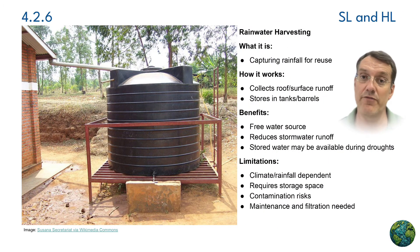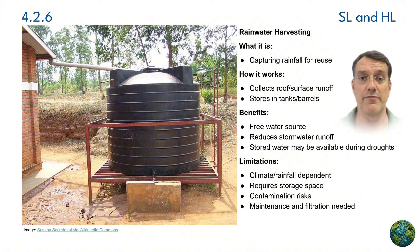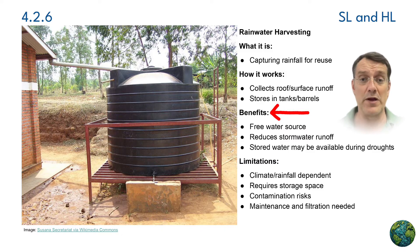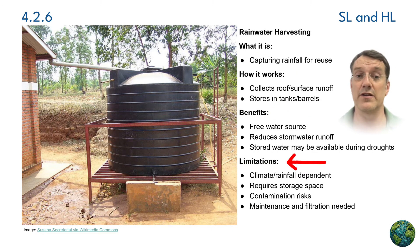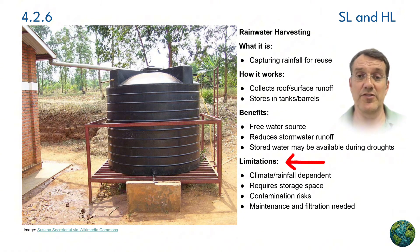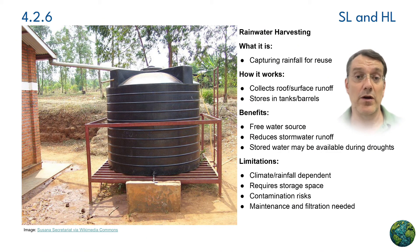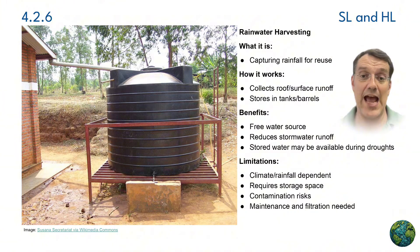Rainwater harvesting involves collecting rainfall for household use, typically from roof surfaces. The system collects roof or surface runoff and stores it in tanks or barrels for later use. Benefits include providing a free water source, reducing stormwater runoff, and making water more available during drought periods. Limitations include climate and rainfall dependence, storage space requirements, the risk of contamination, and maintenance depending on the complexity of the system. Rainwater harvesting is particularly valuable in areas with seasonal rainfall patterns, allowing households to capture water during wet periods and store it for use during drier times.